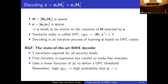The main characteristics of BGF — the state-of-the-art BIKE decoder — are that it requires five iterations for all security levels, where the first iteration is expensive but careful to make few mistakes. It uses a linear function on the weight of the secret syndrome to define a UPC threshold that decides which bits to flip; high UPC_i implies high probability that E_i equals one.